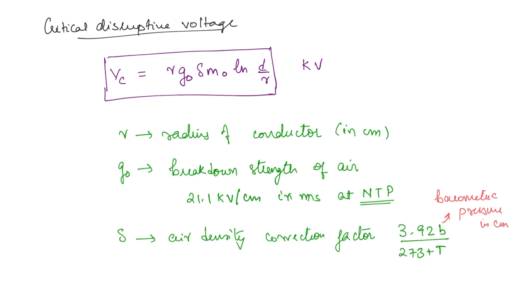At atmospheric pressure we measure in terms of centimeters. And T here is the temperature in centigrade, in degree centigrade. So this is delta.